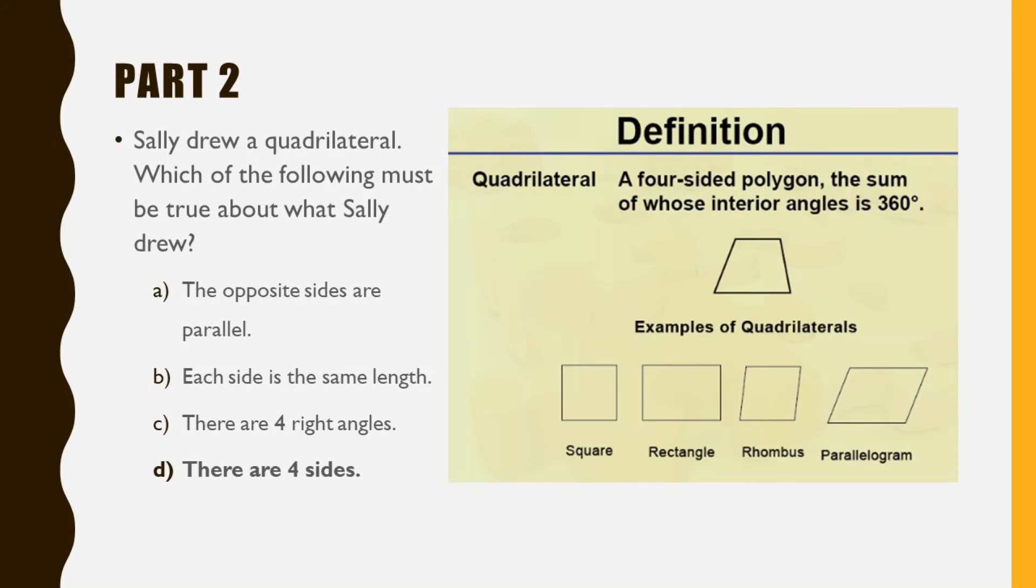The only property needed to make a shape a quadrilateral is that there are four sides. So D is the correct answer.